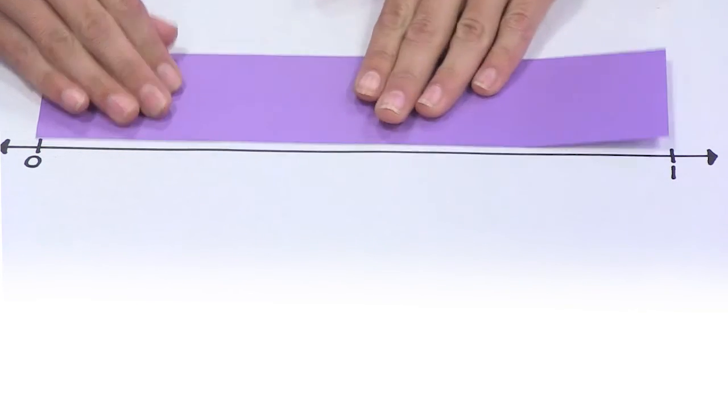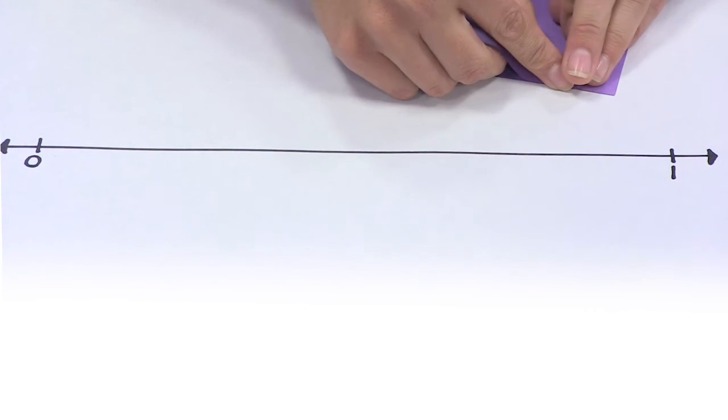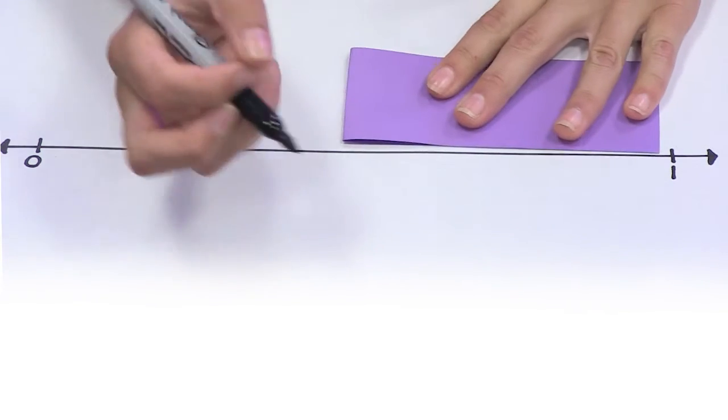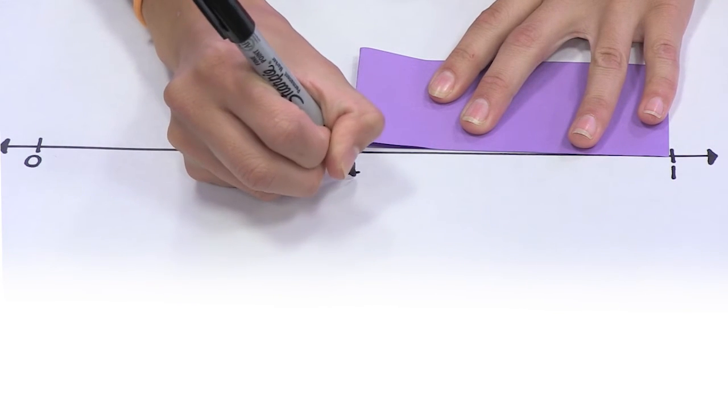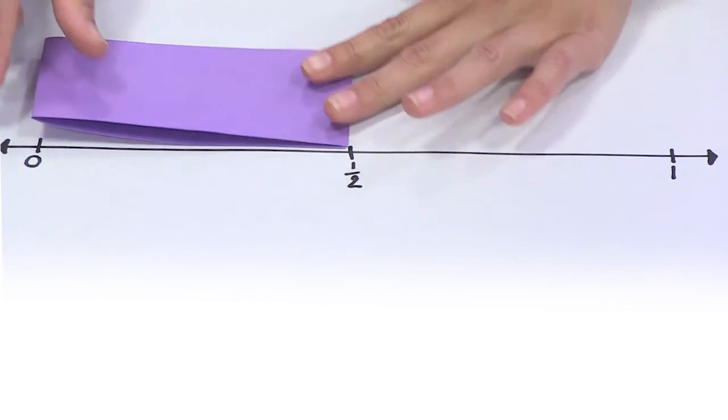For instance, if I wanted to cut a strip of paper equal to my whole, I could fold it in half, representing one half of my whole, and giving me a visual of where I can partition my number line.